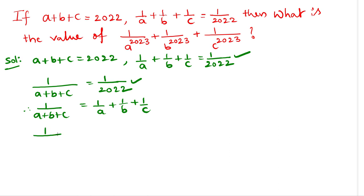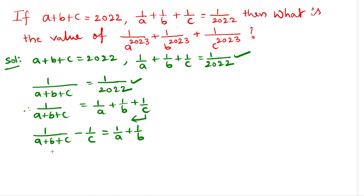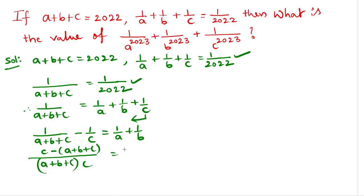From this, let us send 1/C to the left side, so we get 1/(A+B+C) minus 1/C equals 1/A plus 1/B. Taking the least common denominator on the left side gives us (C minus (A+B+C)) divided by C(A+B+C), which equals 1/A plus 1/B.